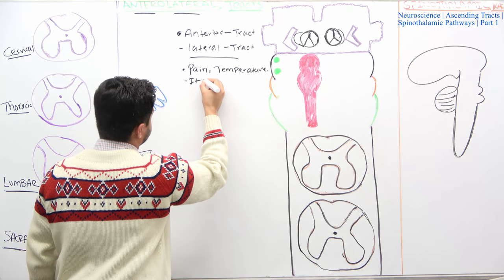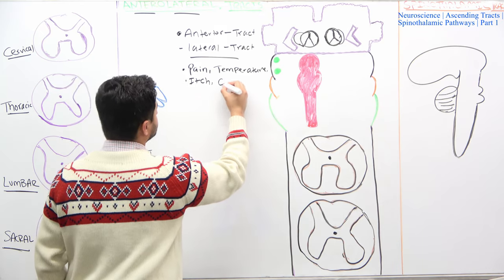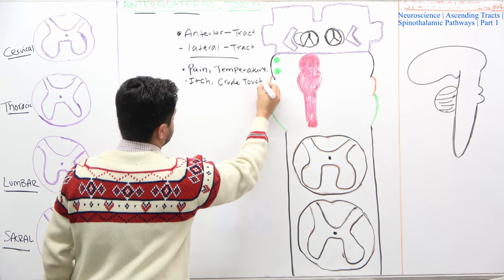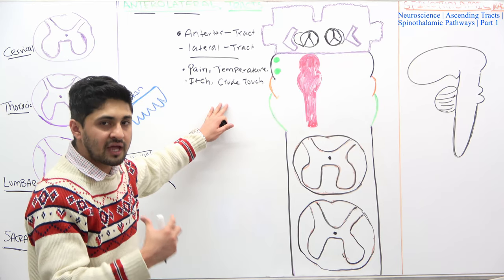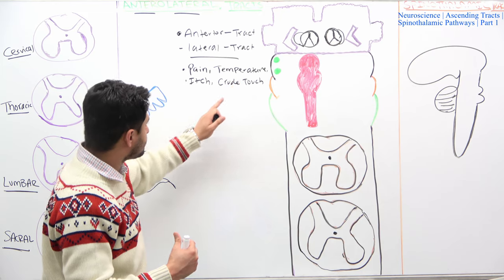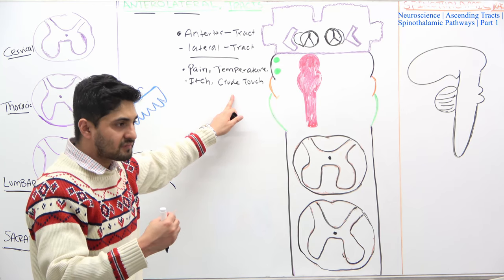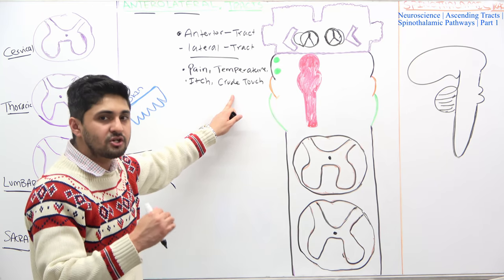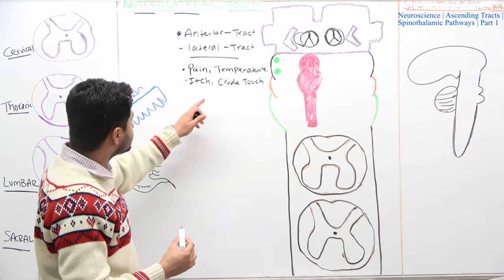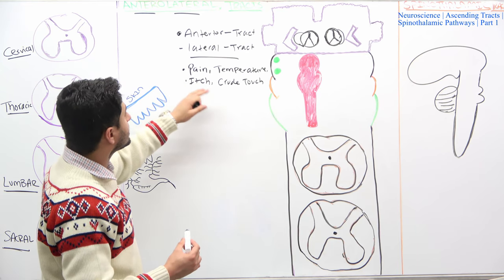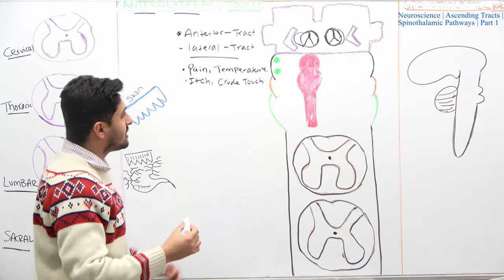— and also itch, which is often not mentioned. And also light touch or crude touch. The anterolateral system is very important for carrying impulses related to pain, temperature, itch, crude touch or light touch, and some light pressure — not heavy pressure.